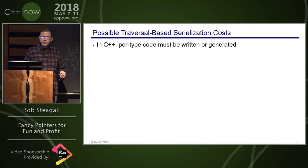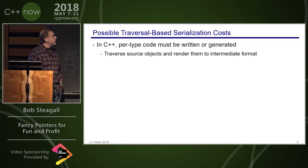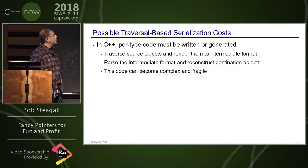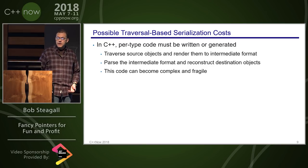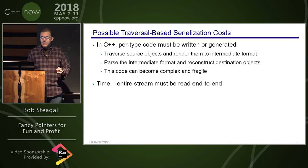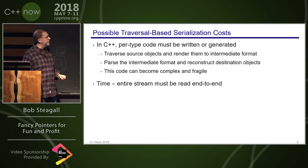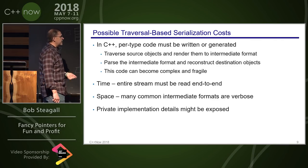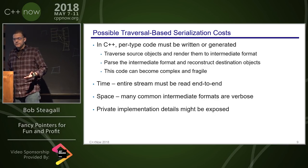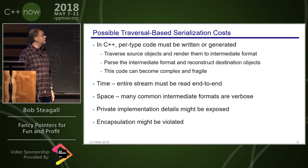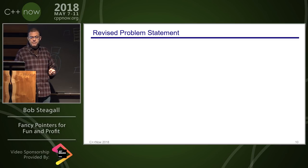There are costs associated with serialization. In C++, we don't have reflection yet, so per-type code has to be written or generated. You must traverse source objects, render them to the intermediate format, and then parse the format to reconstruct destination objects—code that can be complex and fragile. There are temporal costs because the entire stream must be read end-to-end, spatial costs because many formats like XML are verbose, and potential encapsulation violations.